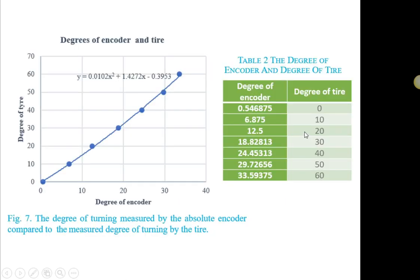It can be observed that when the degree of the tire is at 0 degree, the encoder read the angle at 0.5. So, meaning that there are errors between the angle of tire and the angle of the encoder.